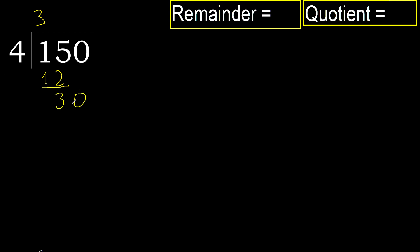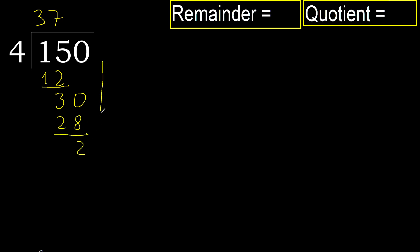Next, bring down 30. 4 multiplied by 8 is 32, which is greater. Multiply by 7 is 28, which is not greater. Subtract.